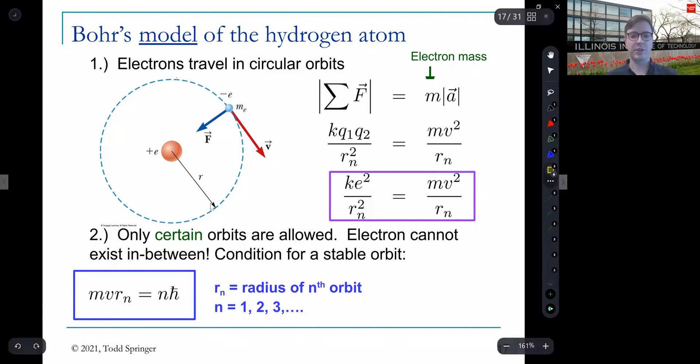And then you say, well, why should I assume that? And it has something to do with angular momentum. But really, it's just an ad hoc assumption. Let's assume it and see what happens. So those are the two ingredients, circular orbits and this quantization condition that only certain orbits are allowed, according to this condition in the blue box. That then n here is labeling the radius of the nth orbit. So n goes from one, two, three. It's some integer, positive integer.